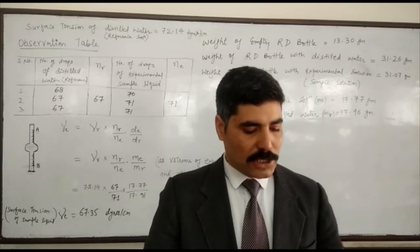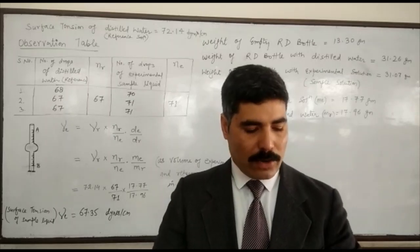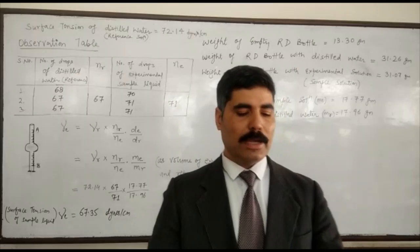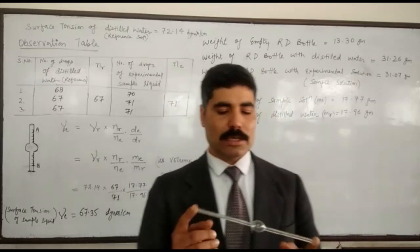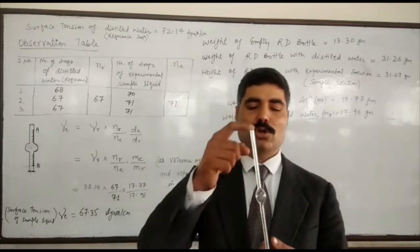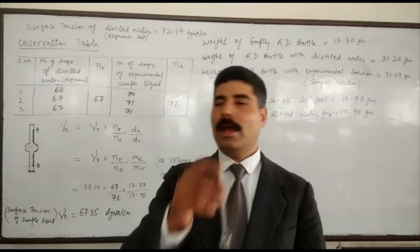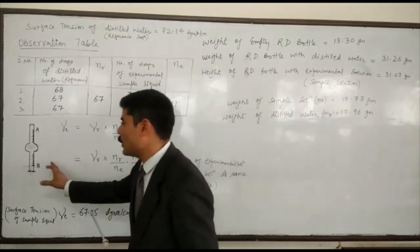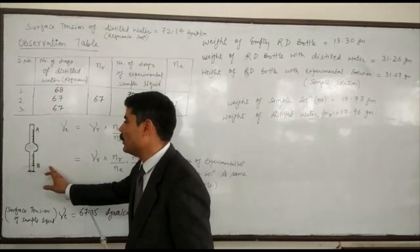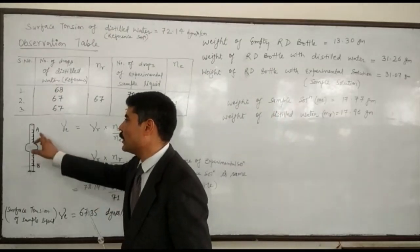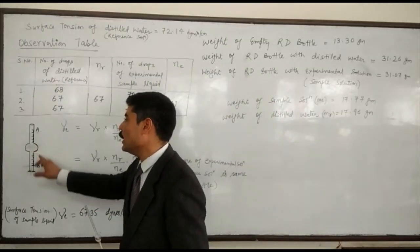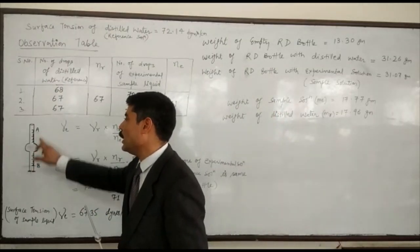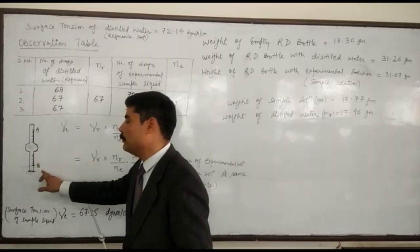Surface tension of a liquid is determined with the help of a stalagmometer. This is a stalagmometer, and this is the diagram of the stalagmometer, where we mark the upper mark A and the lower mark B.